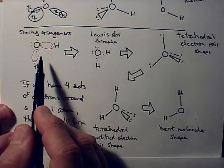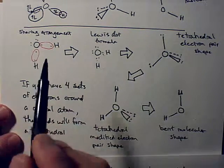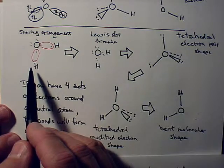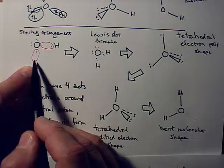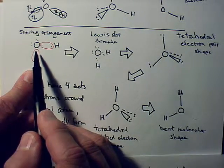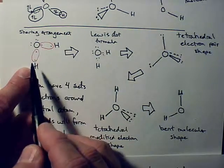First, you've got to figure out your sharing arrangement so that each one of the atoms gets a full valence level of electrons. Hydrogen only wants two, but oxygen needed how many to be full? Two, four, six, and eight, right?